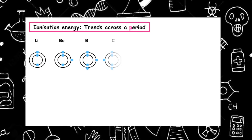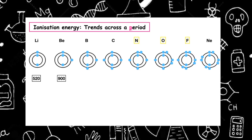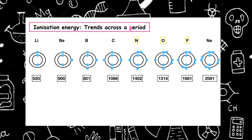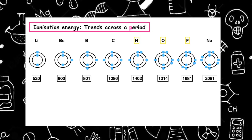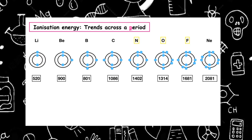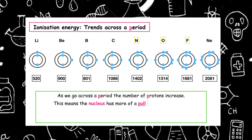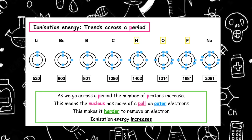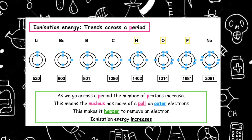Let's look at the trends across a period. If we draw the electron arrangement diagrams for lithium to neon and select the first ionization energy for each of those elements from page 12 of the data booklet, we can see a trend. Each of the atoms has two electron shells, so that can't be making the difference. It must be the protons inside the nucleus. As we go across a period, the number of protons increase, meaning the nucleus has more of a pull on the outer electrons, and therefore the energy required to remove an electron would increase. The first ionization energy increases as you go across a period.